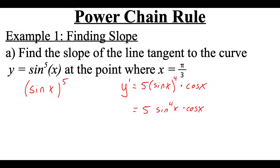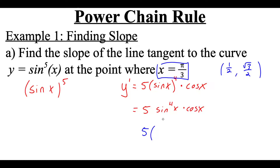That's the derivative. But we want to find the slope when x is pi over 3. If we think about the unit circle, pi over 3 has an ordered pair of 1/2 and root 3 over 2. So if we start plugging things into this derivative, this is going to be 5 times sine — which is the y value, so root 3 over 2 — raised to the fourth power, and then cosine is the x value from the ordered pair, so that's 1/2.